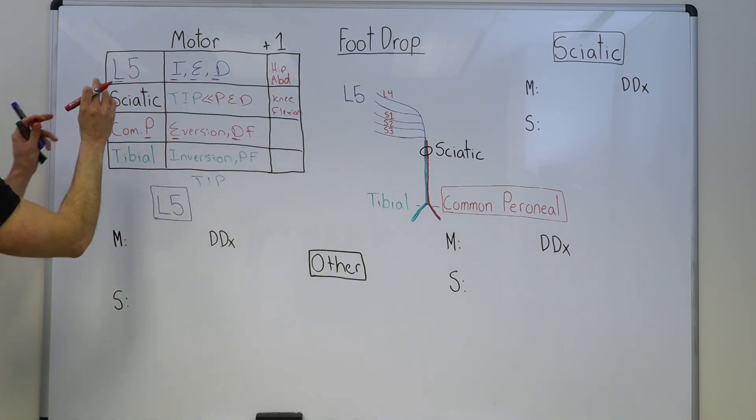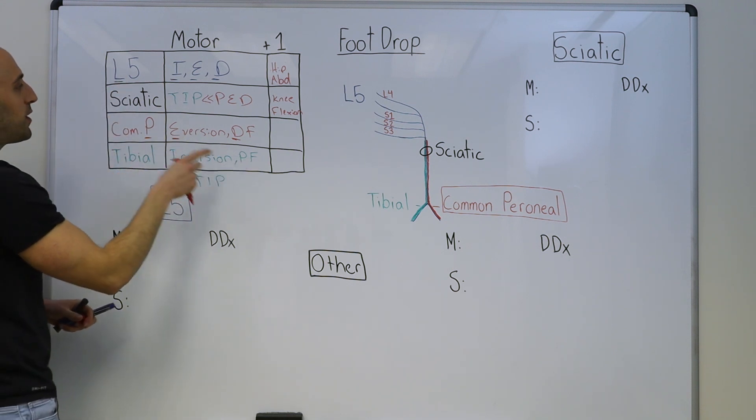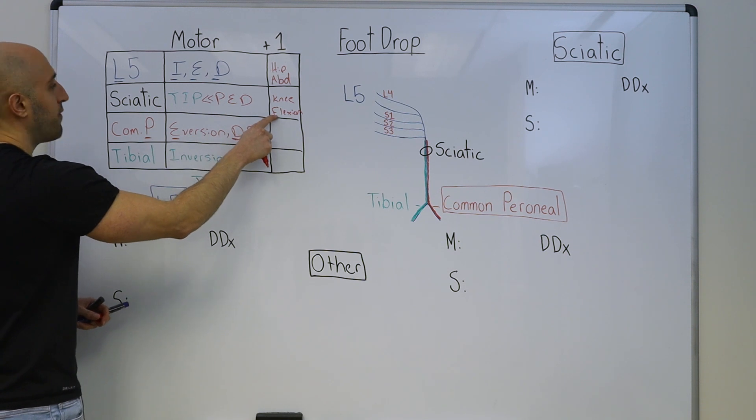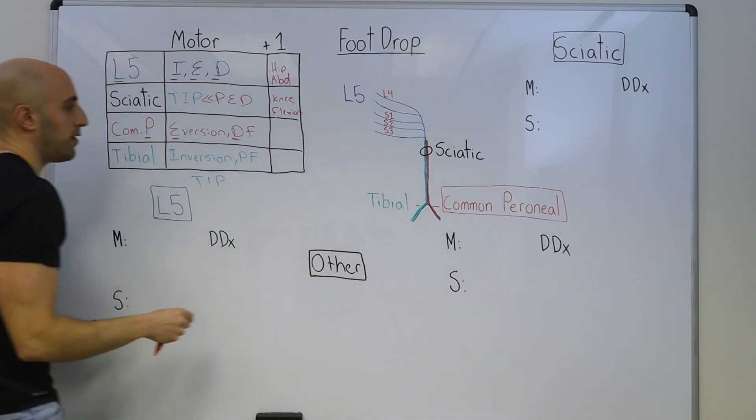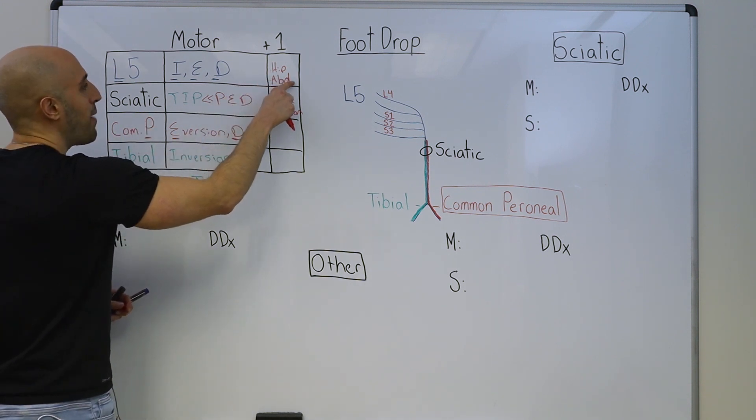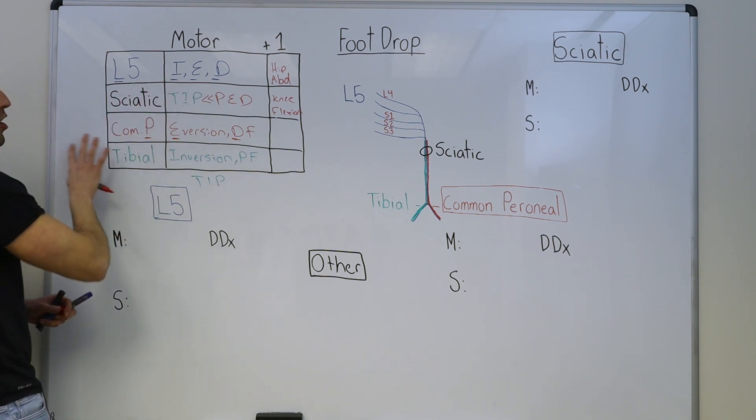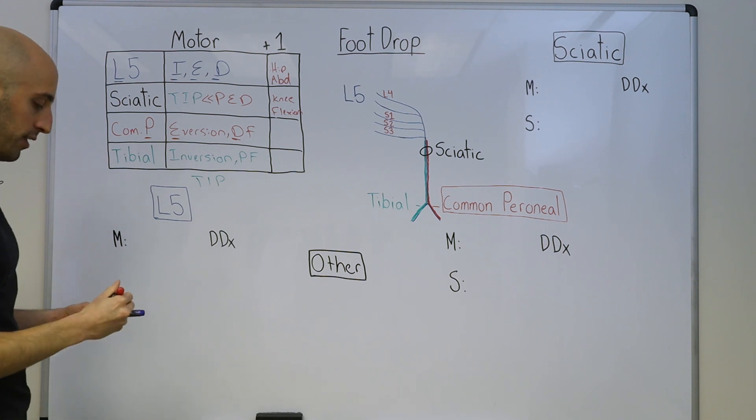So right away, just looking at the motor effects of each of these nerves, we see some differences. If someone has a foot drop with impaired knee flexion, we can localize to a sciatic neuropathy. If someone has a foot drop with impaired hip abduction but normal plantar flexion, we can localize to an L5 radiculopathy.